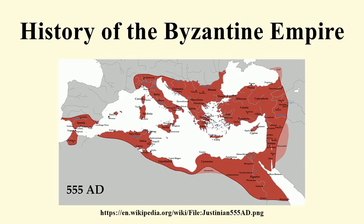Anastasius revealed himself to be an energetic reformer and an able administrator. He perfected Constantine I's coinage system by definitively setting the weight of the copper follis, the coin used in most everyday transactions. He also reformed the tax system and permanently abolished the hated Chrysargyron tax. The state treasury contained the enormous sum of 145,150 kilograms of gold when he died.